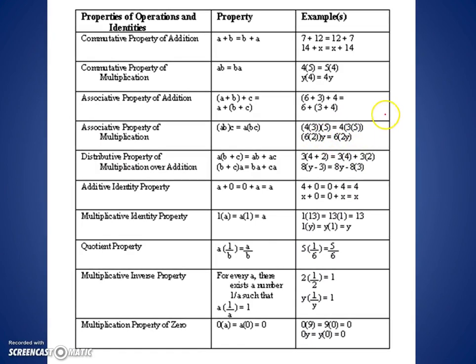Here we have an example of the properties that you're responsible for understanding, along with a given algebraic example and a numerical example. So here we got the commutative property of addition, which basically says that any number plus another number is equal to the same two numbers reversed. So 7 plus 12 is the same thing as 12 plus 7, or 14 plus x is the same thing as x plus 14. Commutative property of multiplication is the same idea, except using multiplication. Any number times another number is the same as that other number times it reversed. So 4 times 5 is equal to 5 times 4, or y times 4 is equal to 4 times y.